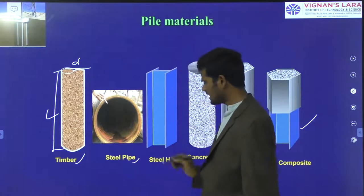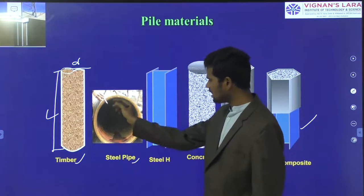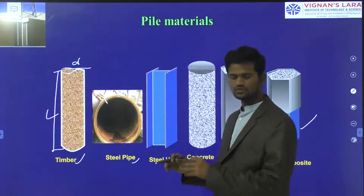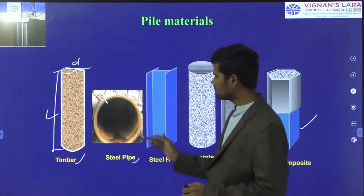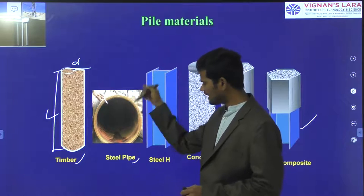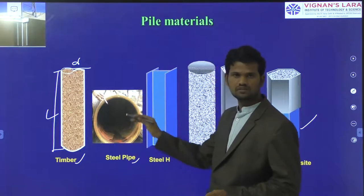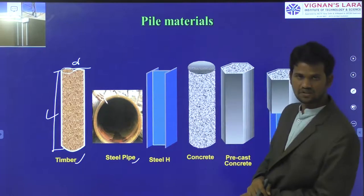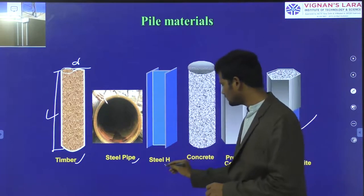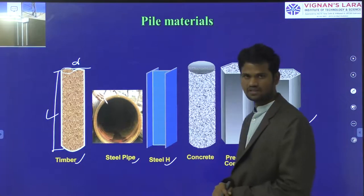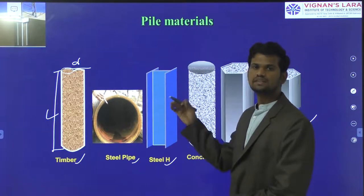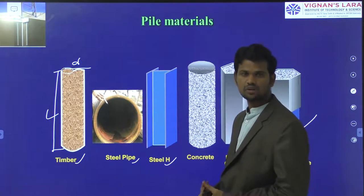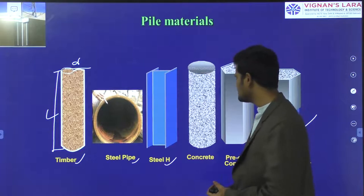Next, we are having the steel pipe. This is the hollow type structure, and a solid soil mass structure is also available. The hollow pipe structure is inserted and then filled with some type of material. Next, we are having the steel H-section type foundation. In some construction activities, these steel H-section types are inserted into the underground soil to increase the load carrying capacity of the soil.